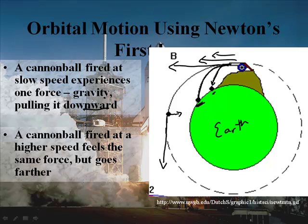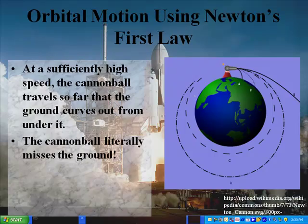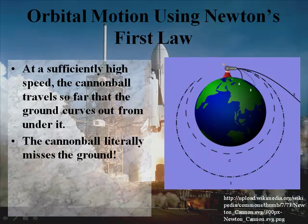If you fired it at a higher speed, it just goes farther. But what if you shot it super, super fast? If you can shoot it at speed C — like this fast — it's going to reach what we call an orbit. Shoot it faster and it reaches another orbit. And as a side note, if you shoot it fast enough, it'll escape — it'll have an escape velocity. So the cannonball literally misses the ground.